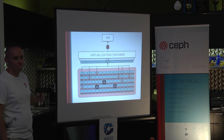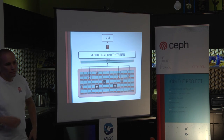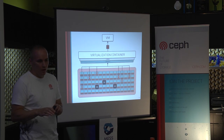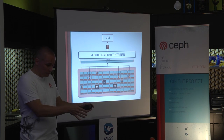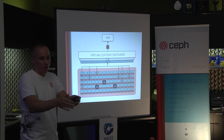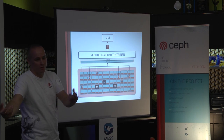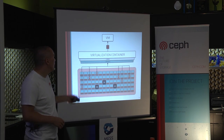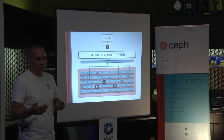Regarding dissimilar drives — Ceph itself doesn't try to do anything about performance differences by itself. What it does is enable you to describe the shape of your data center: rooms, rows, racks, servers, disks. You can put your slow disks into a different hierarchy from the fast disks and control where you place your data. So you can effectively create a tiered environment — for example, each virtual machine gets an OS disk and a data disk stored in different hardware.